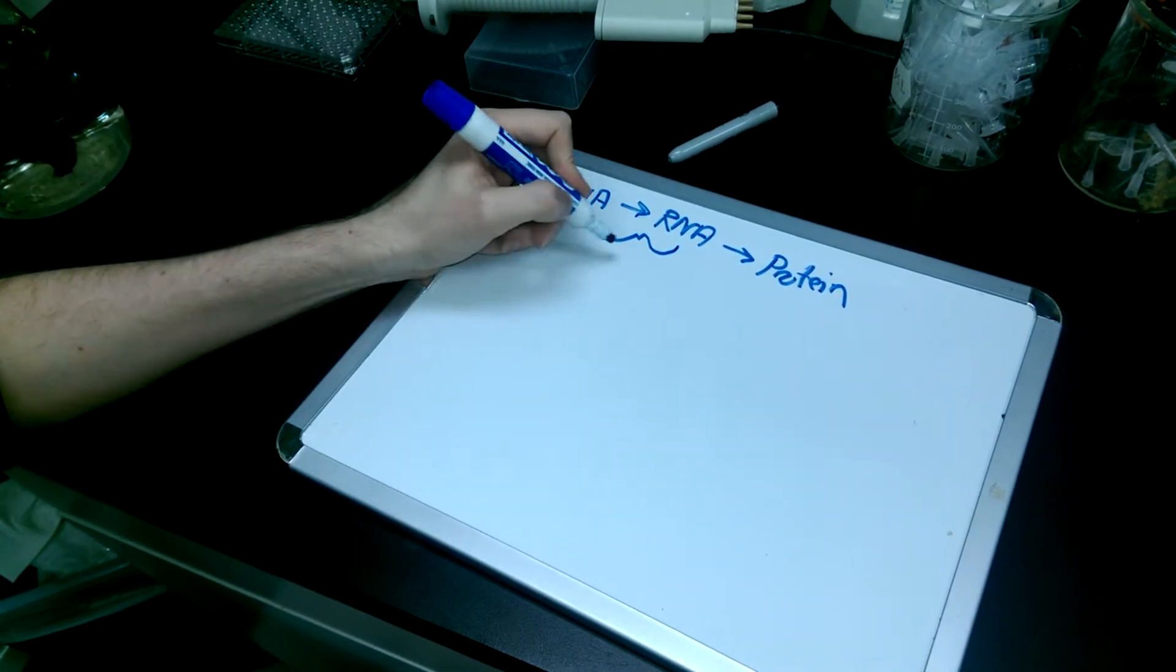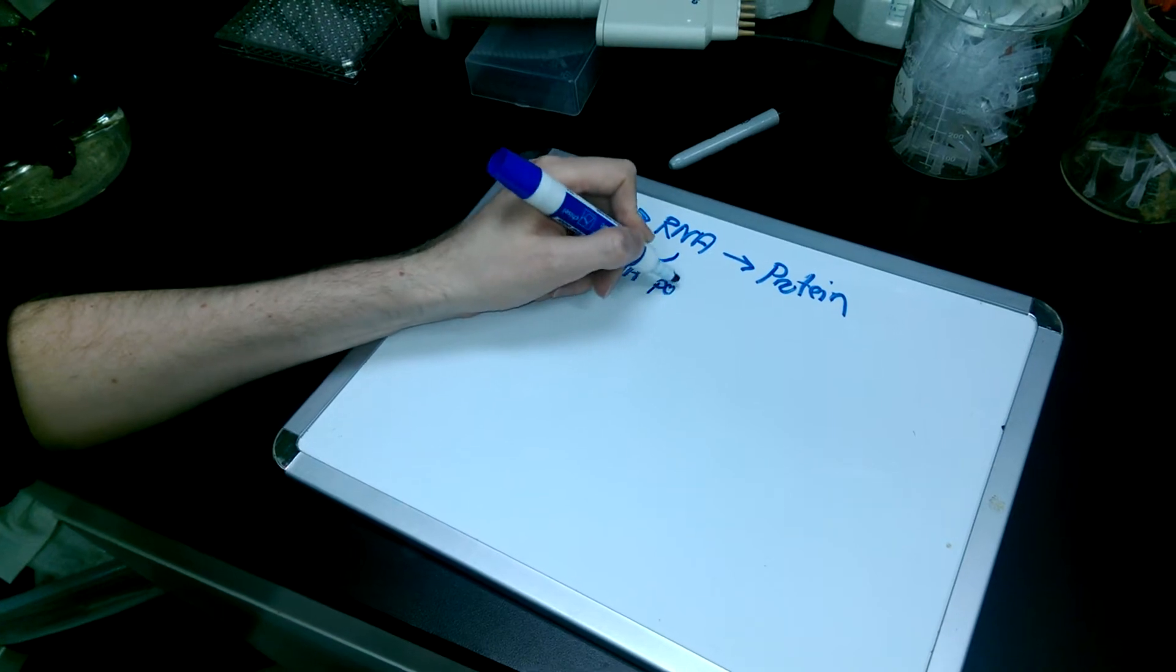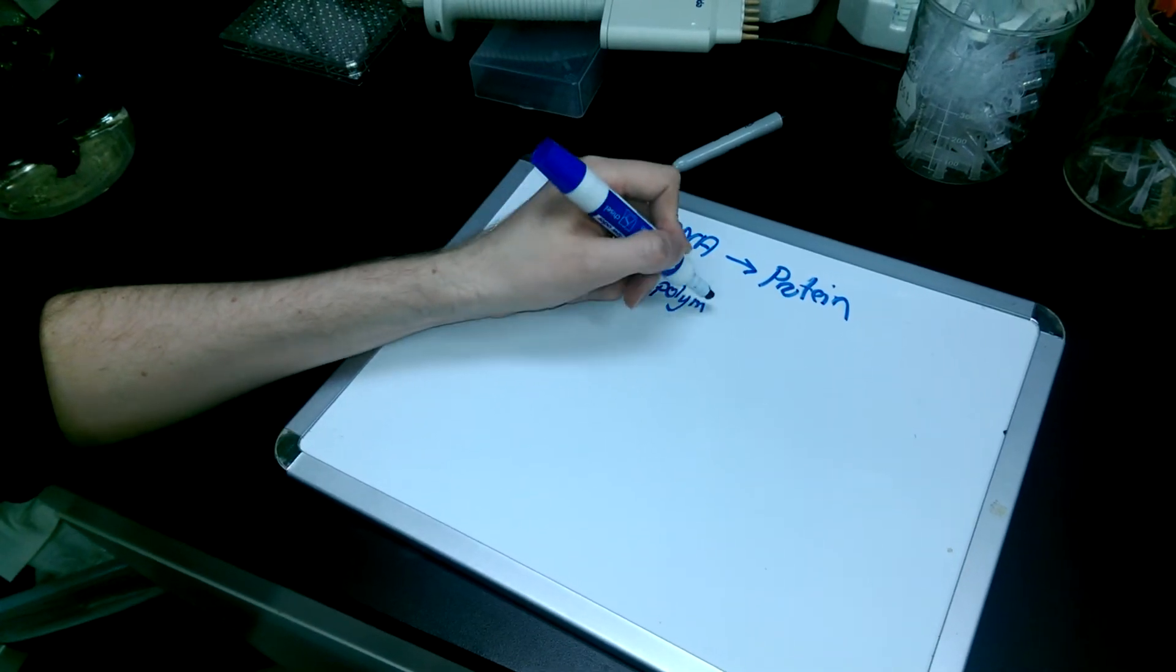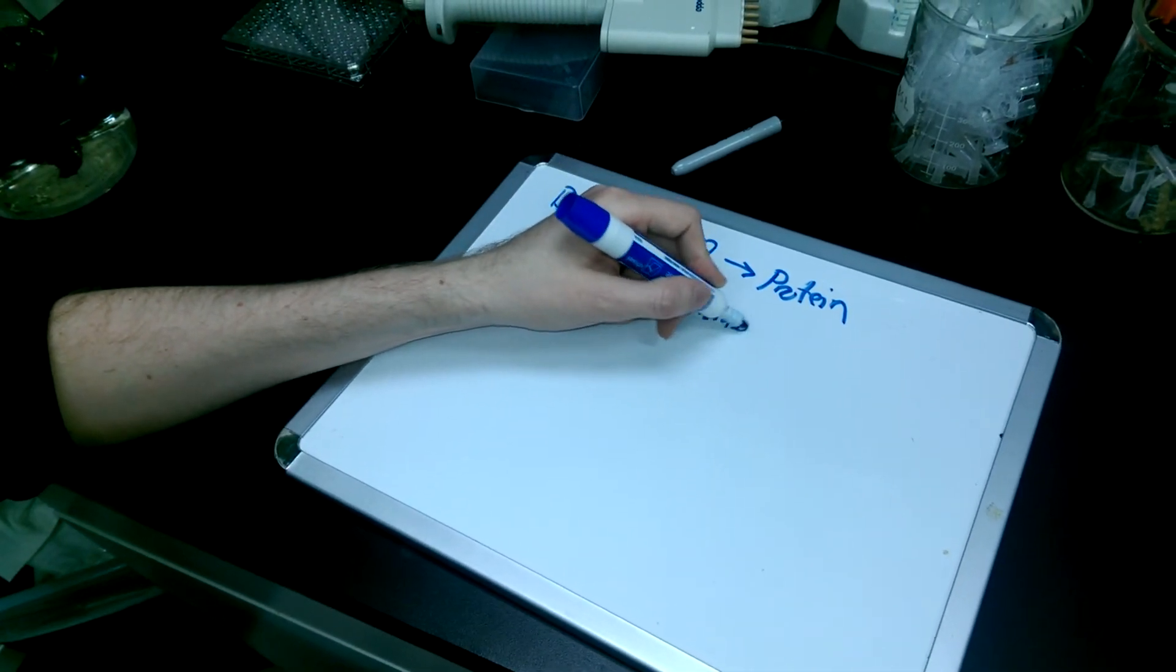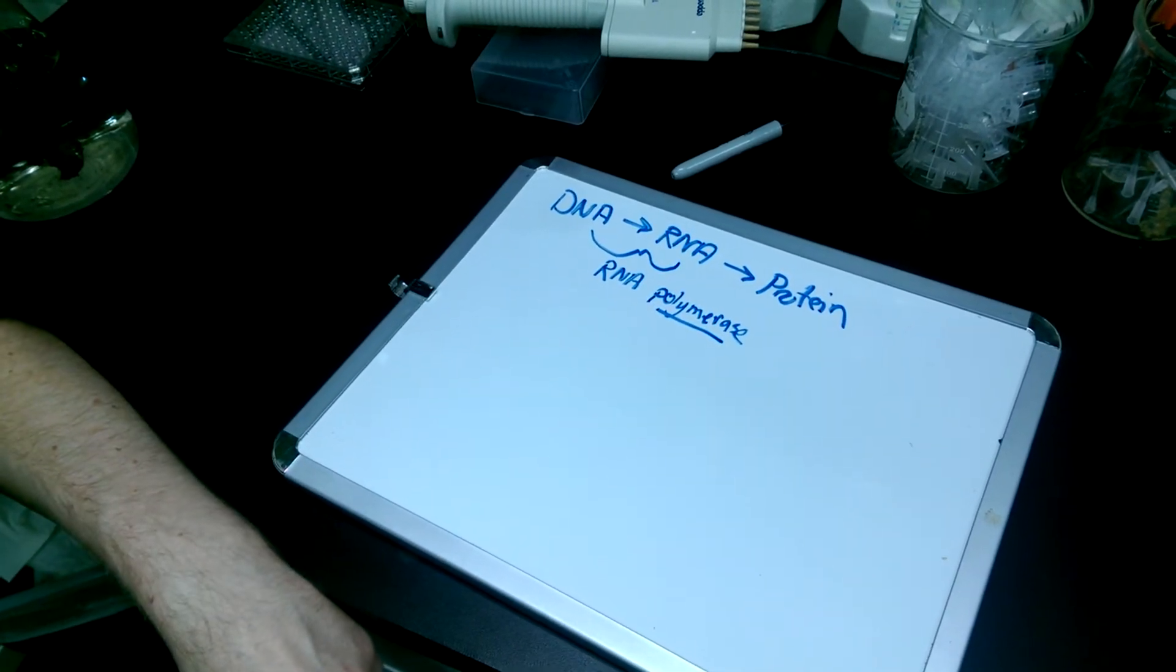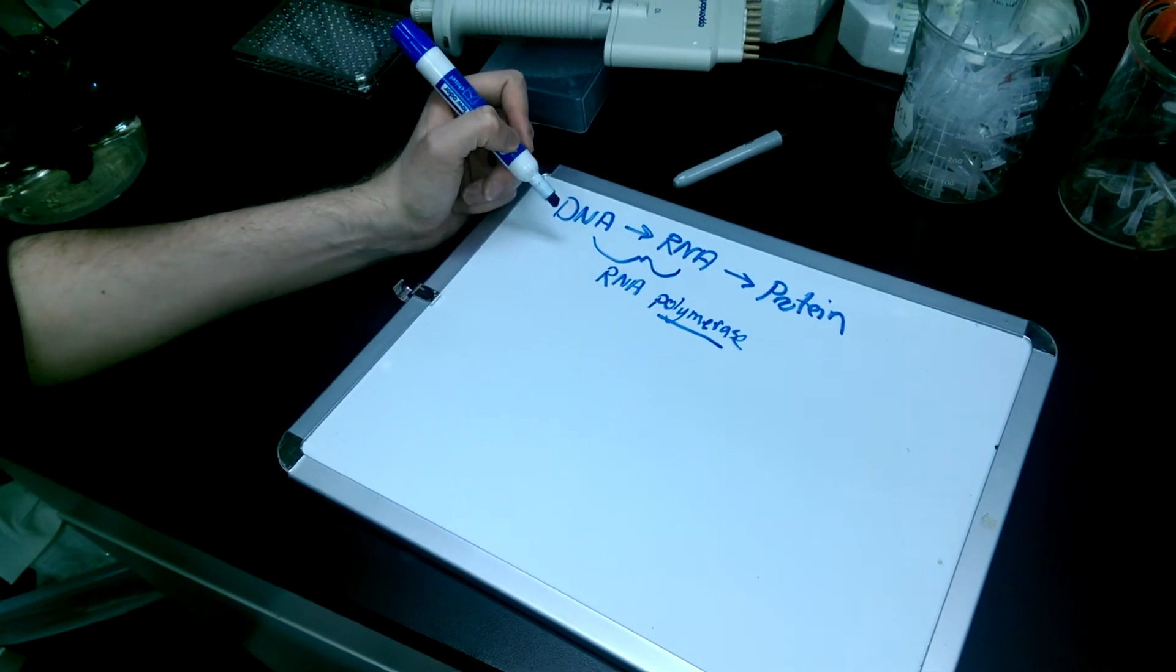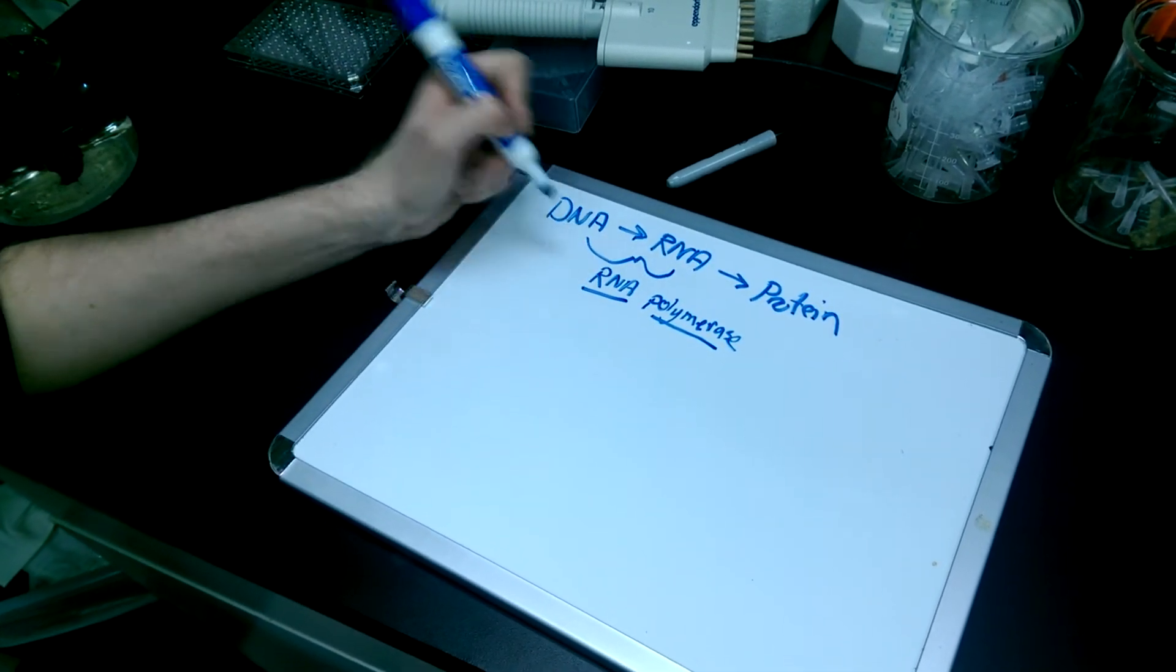And that's really done by this enzyme called RNA polymerase. So a polymerase is basically something that takes individual units and puts them together. And because this takes RNA nucleotides and strings them together, we call it an RNA polymerase.